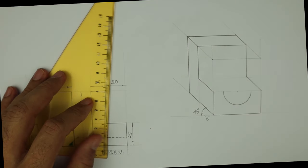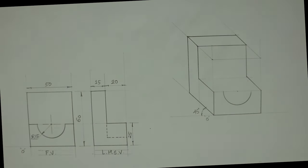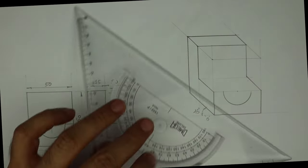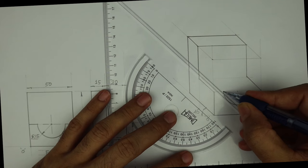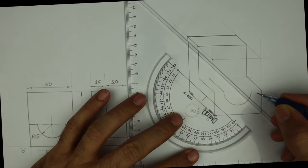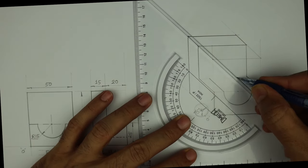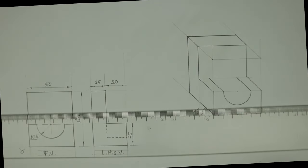Now remember one thing, the same circle will be behind also. How much you have to go behind? You have to go behind by 20. See this, so I'll go behind by 20. I'll take these two lines.